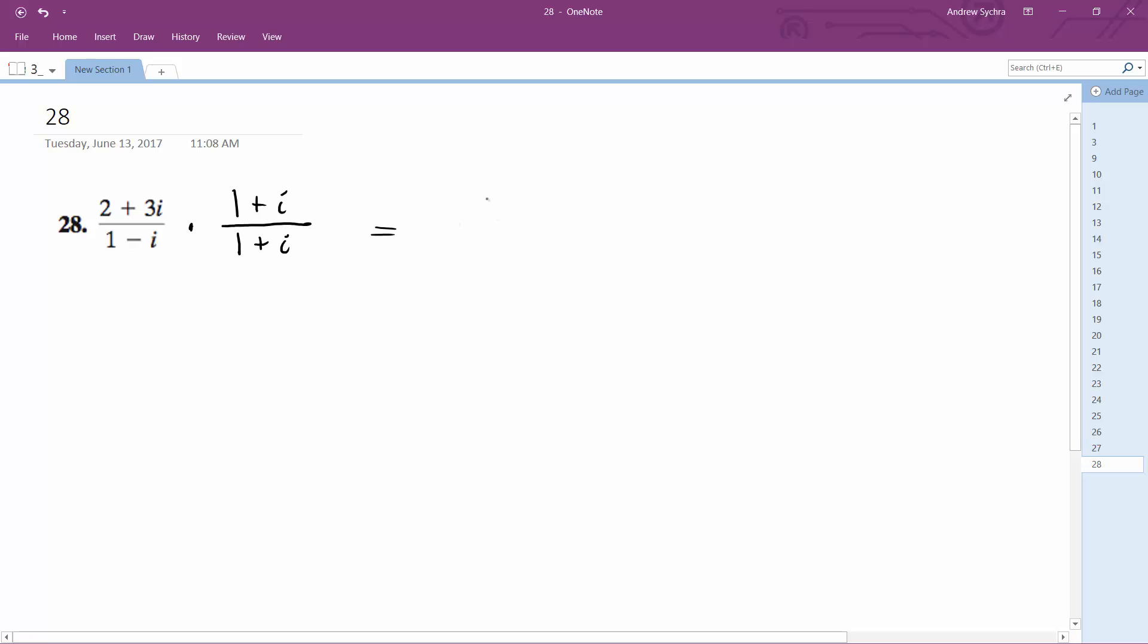So what we end up with is 2 plus 2i plus 3i plus 3i squared all over 1 plus i minus i minus i squared.